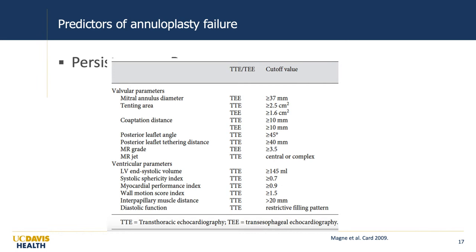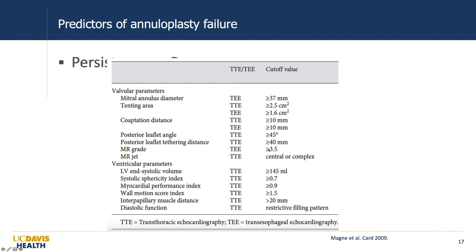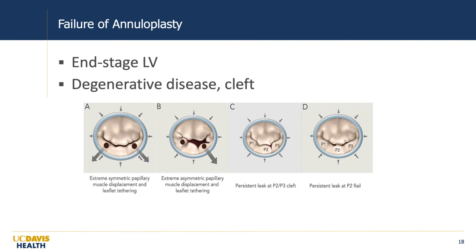Examples of failure or less effective annuloplasty are shown here. Panels A and B show patients with extreme symmetric and asymmetric papillary muscle displacement where you simply cannot overcome that degree of tethering with an annuloplasty ring. Panel C shows patients with a cleft — surgeons will often close the cleft at the time of annuloplasty in up to five to ten percent of cases. Panel D shows that annuloplasty alone does not correct primary mitral regurgitation but is rather adjunctive to a leaflet repair approach.